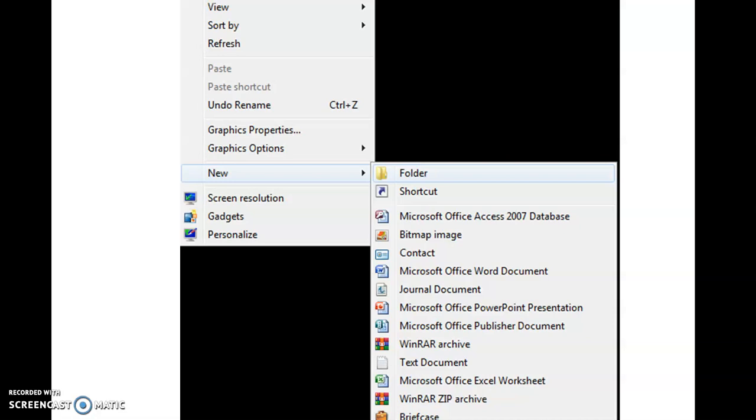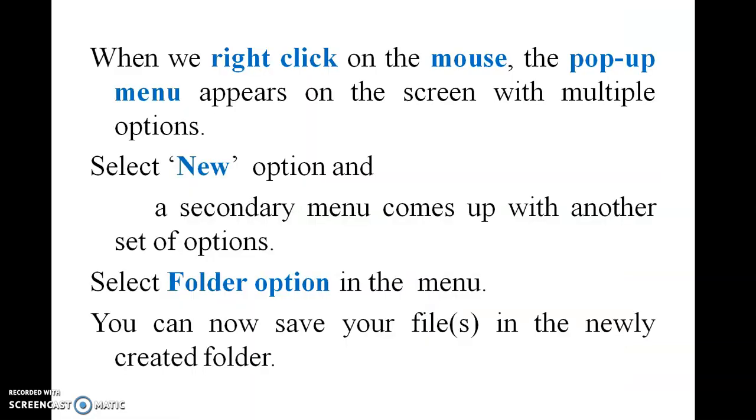When you are right-clicking the mouse, it will come a new, and in the new there are a number of things. In that thing you can see the folder. If you click that, your folder will be created inside. Inside the folder you have to copy the elements, the files. This is mentioned in the theoretical part: how you have to right-click the mouse, pop-up menu will appear, and in the new option you have to go for folder option.